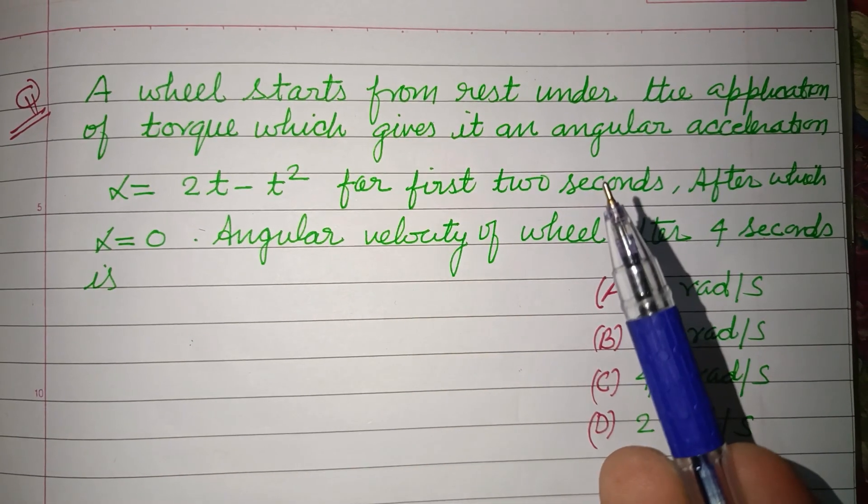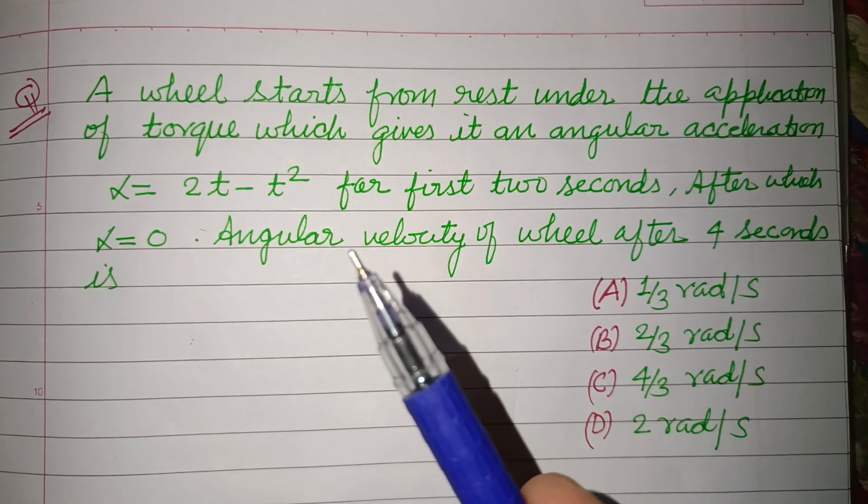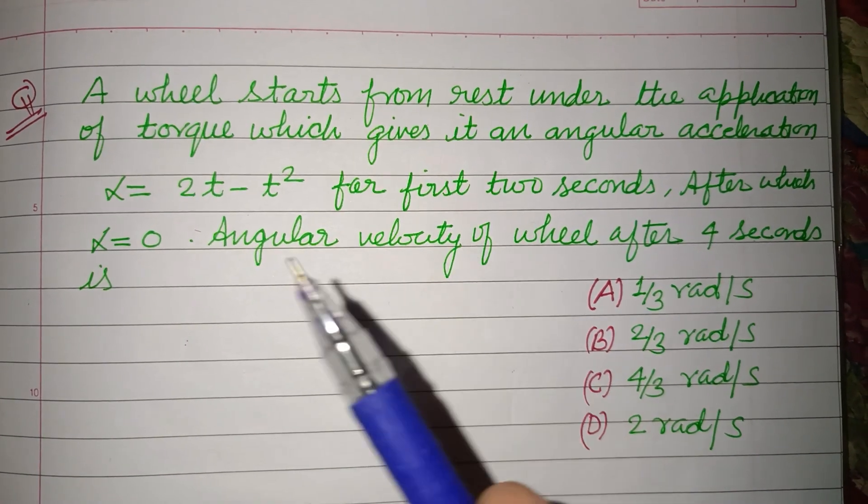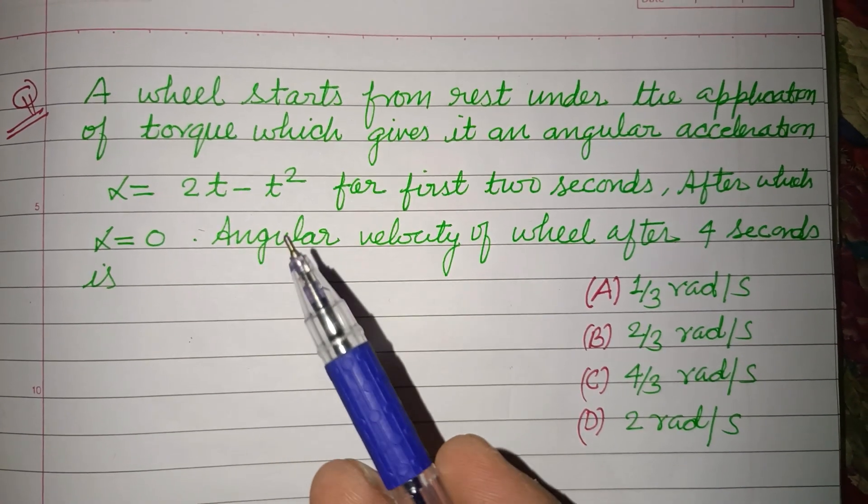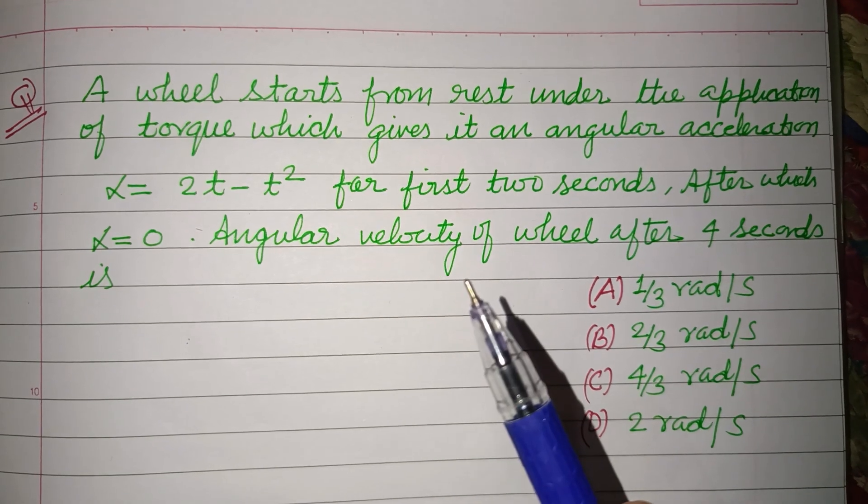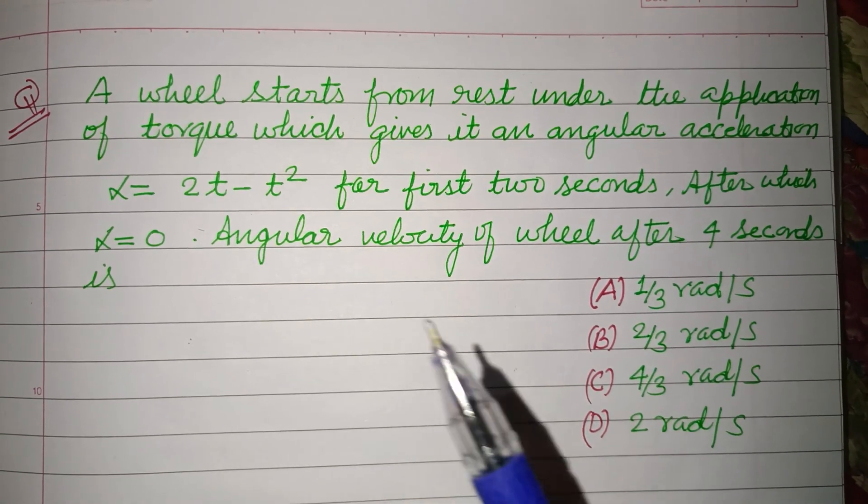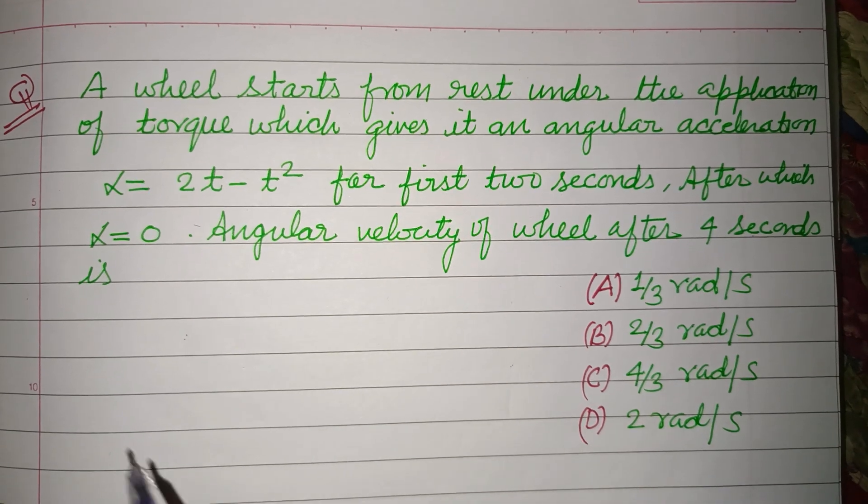A wheel starts from rest under the application of torque which gives it an angular acceleration α = 2t - t² for the first 2 seconds, after which α becomes zero. Angular velocity of wheel after 4 seconds is?